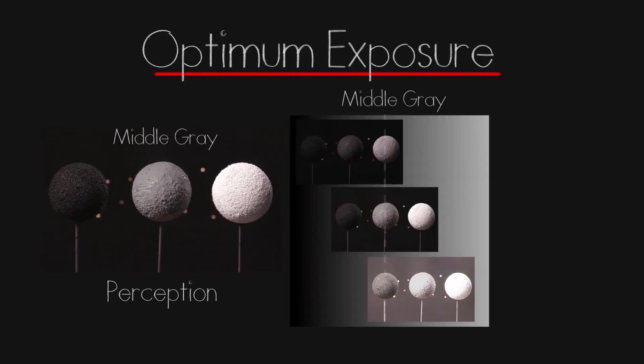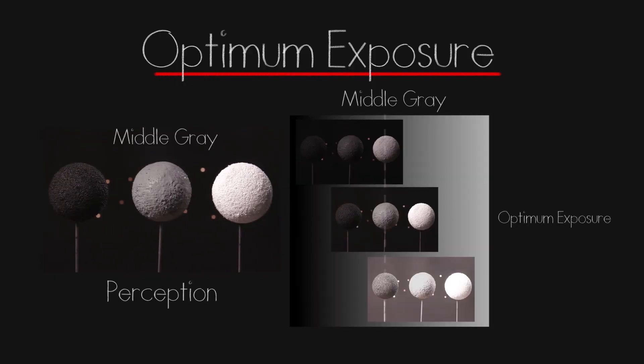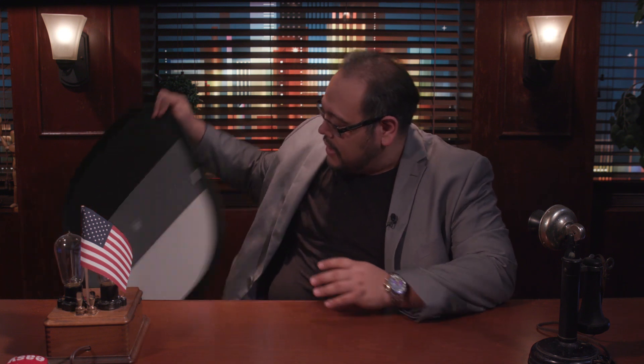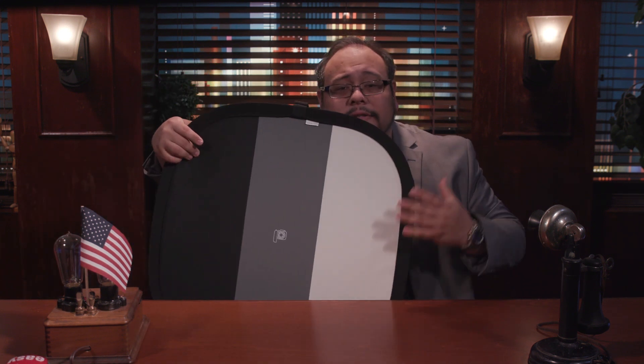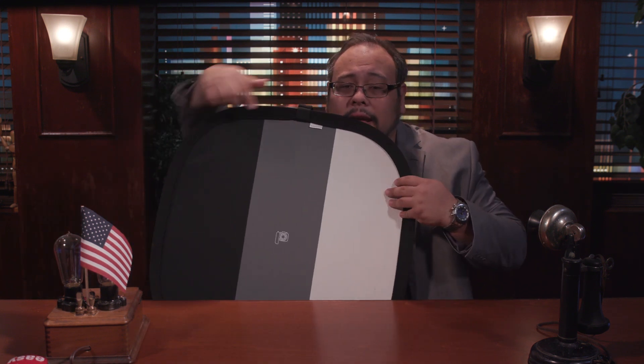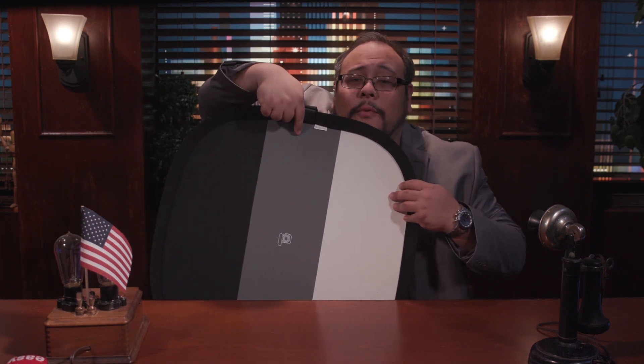Middle gray is simply halfway between white and black. Here's black, here's white, and that's halfway. That's what we call middle gray.